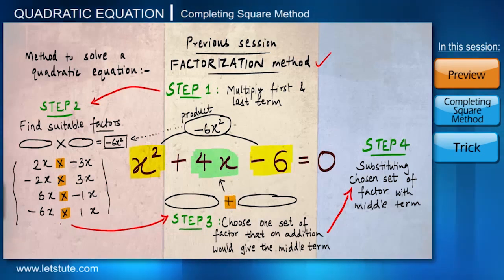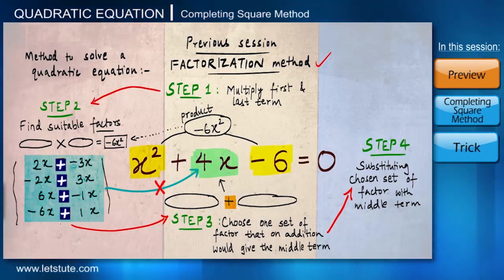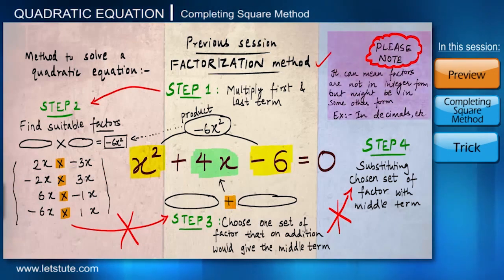But in this case, if we carefully notice, it seems we don't really have any such set which on addition will give us the middle term 4x. And therefore, we cannot really go into step 4 and solve the quadratic equation. Now, at this point, I would like to say it doesn't mean that the factorization method is ineffective or cannot be used. What it only means is factors are not in an integer form for this particular example.